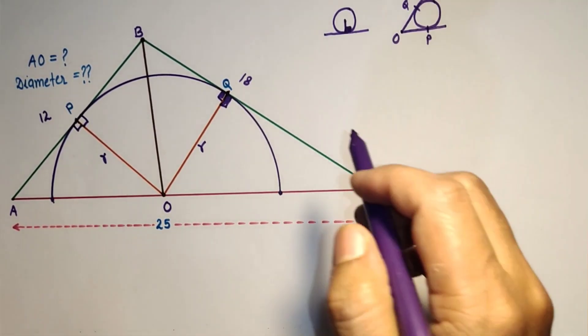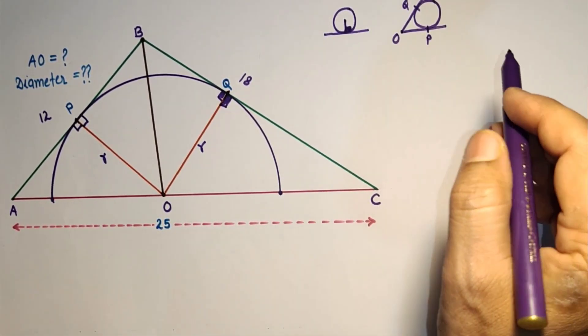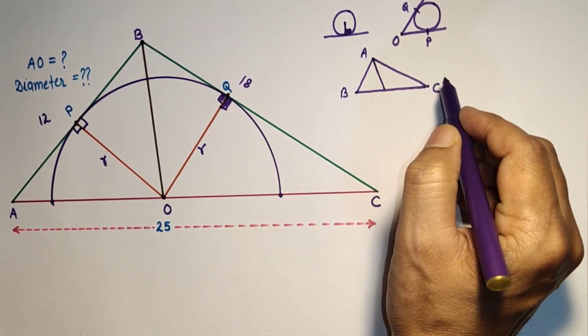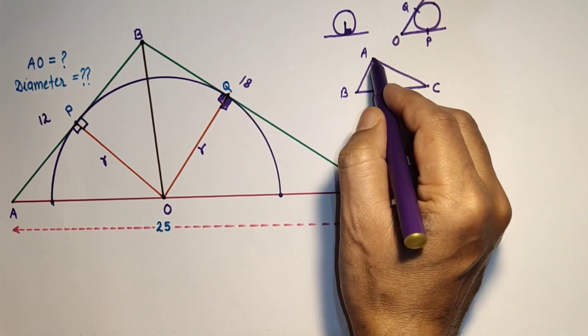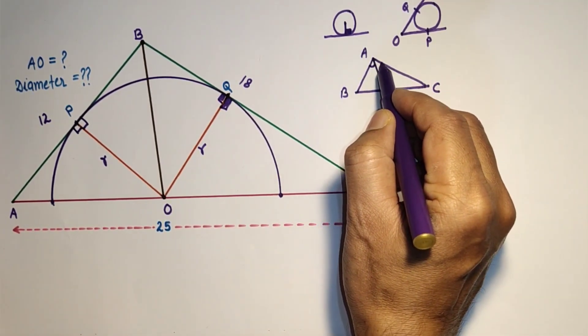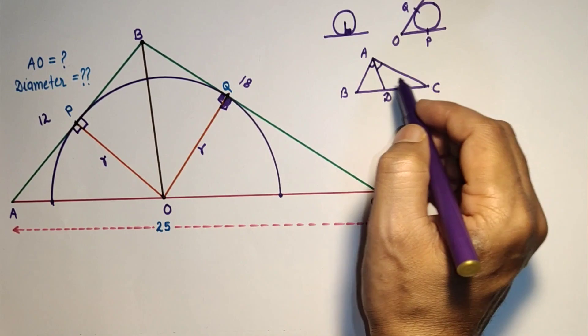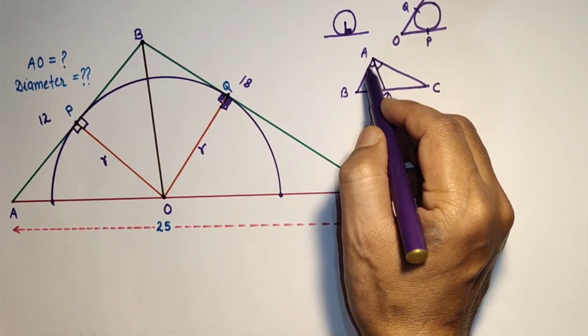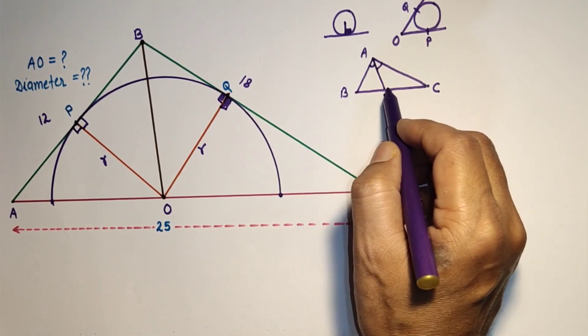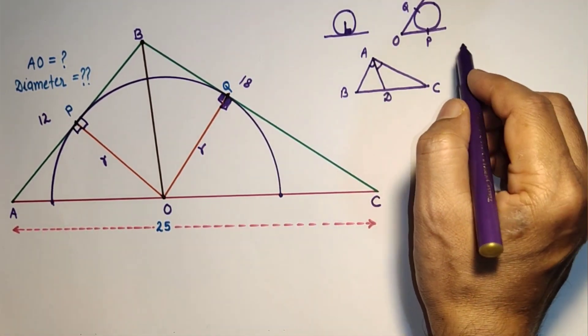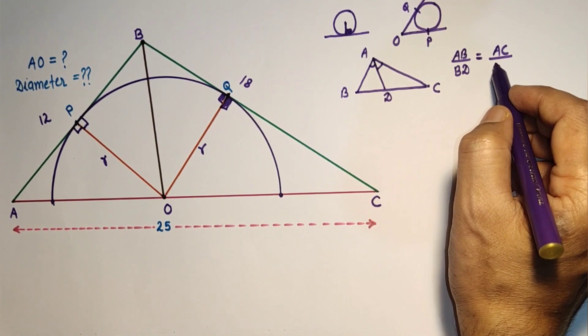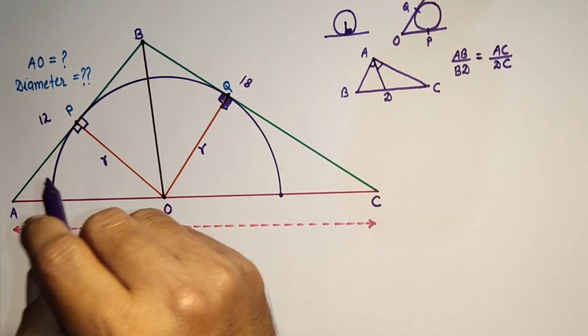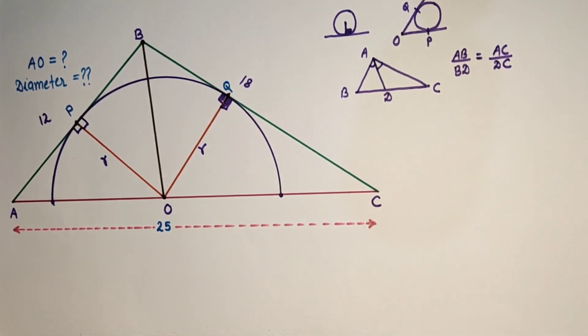And third concept is angle bisector theorem. Let ABC be any triangle and AD bisects this angle BAC, means this angle is equal to this angle. Then according to angle bisector theorem we can say that AB upon BD is equal to AC upon DC. This is angle bisector theorem. These three concepts we are going to use here.